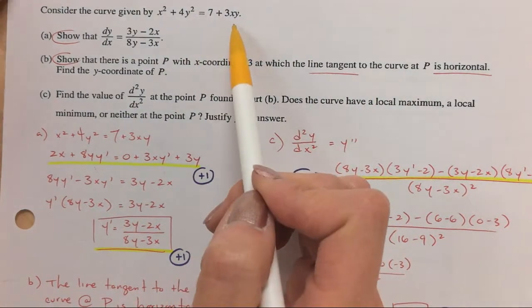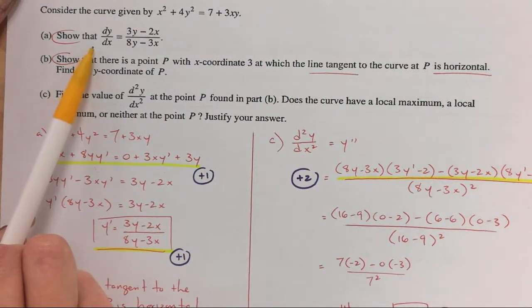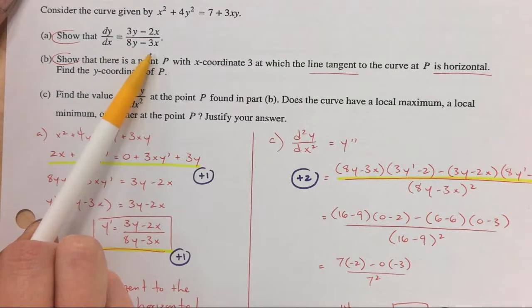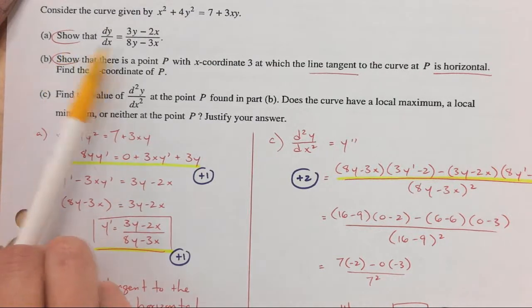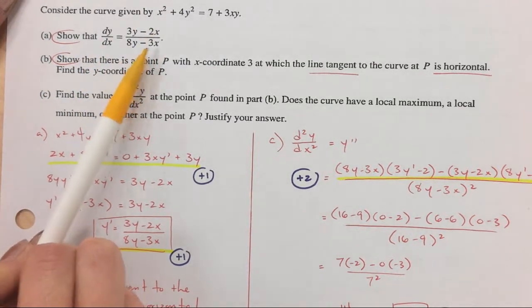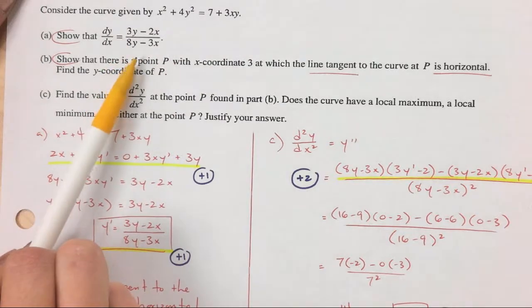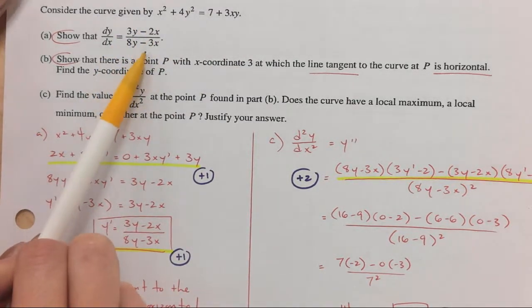So you have a curve and they say show that the derivative equals... When they say show or verify, they're basically wanting you to... This is the answer. They're giving you the answer. They want you to show that you could get that answer. So you have to show every step and pretend that you don't have that answer yet.